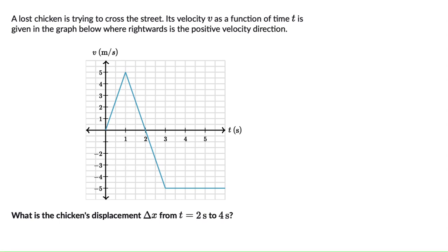A lost chicken is trying to cross the street. Its velocity v as a function of time t is given in the graph below where rightwards is the positive velocity direction. We can have a look at the graph.